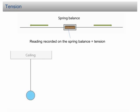For example, if an object is hung on a thread which is attached to a ceiling, the weight of the object will exert a pull on the thread. According to Newton's third law, this will produce a force of the same magnitude but acting in the opposite direction, pulling the object upward. This force is called the tension of the thread.